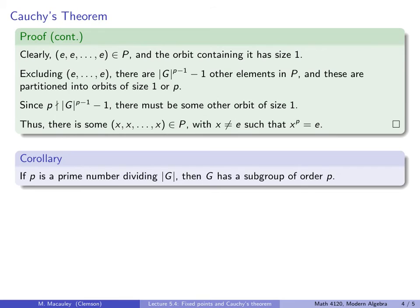An easy corollary of Cauchy's theorem is that if p is a prime number dividing the order of a group, then that group has a subgroup of order p. And that's just because, well, there's an element of order p, an element x, and that will generate a cyclic subgroup of order p.